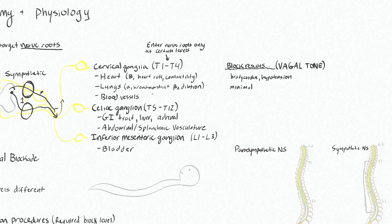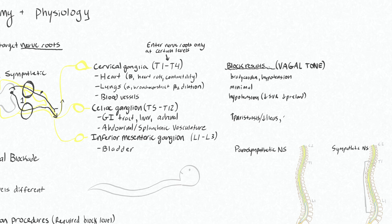When you block the sympathetic tone to your blood vessels, you get vasodilation and hypotension. This is both from a decrease of your systemic vascular resistance from arterial tone, and a decrease of your preload from venous vasodilation. For your GI tract, the dominant parasympathetic tone is associated with increased peristalsis or decreased ileus. And by blocking sympathetics to and from the adrenal gland, you're going to be decreasing the neuroendocrine stress response.